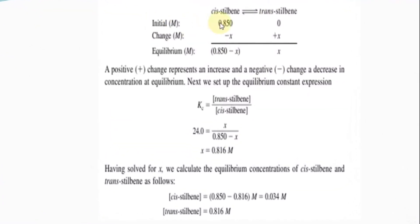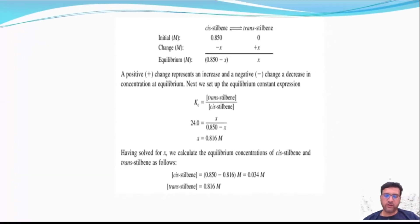Setting up an ICE table with initial concentrations, a positive change represents an increase and a negative change represents a decrease in concentration. Setting up the equilibrium constant expression and putting in the values, we solve for X. The equilibrium concentration of cis-stilbene is 0.034 M and that of trans-stilbene is 0.816 M.